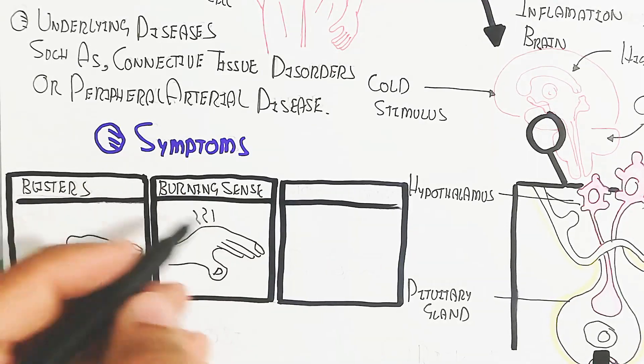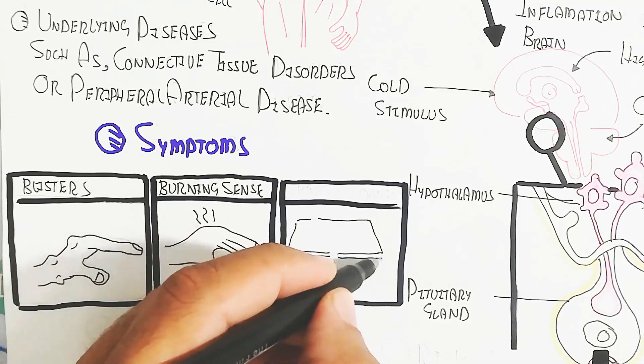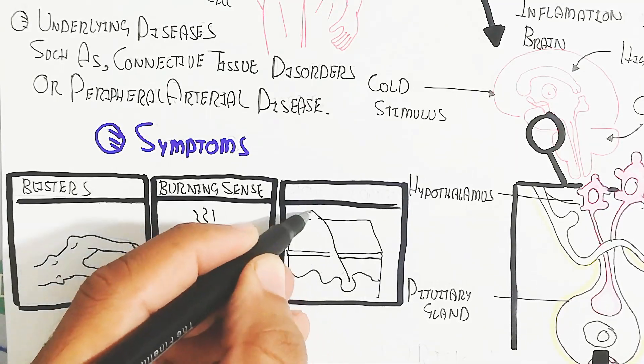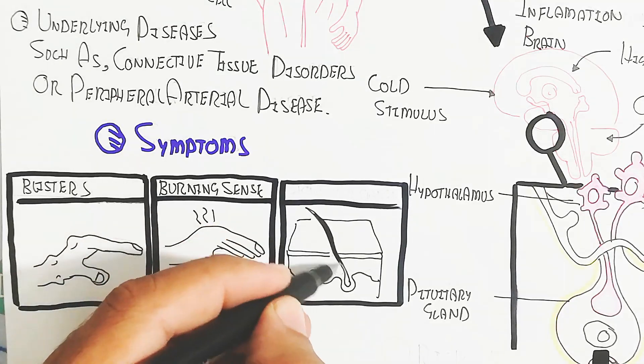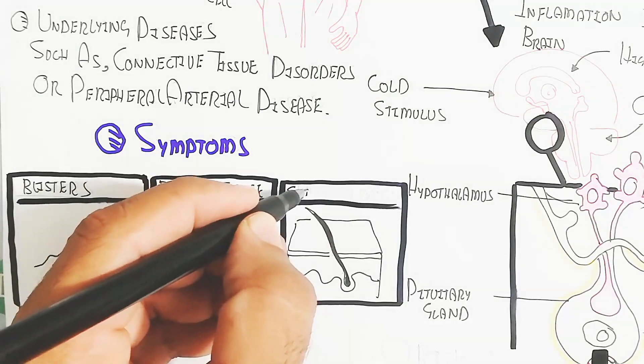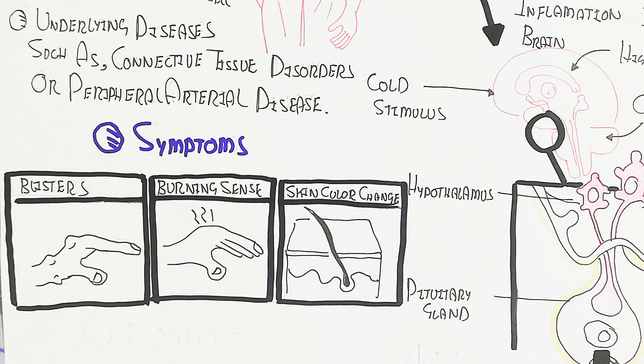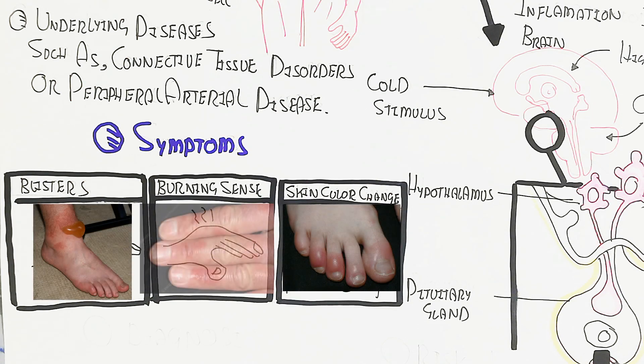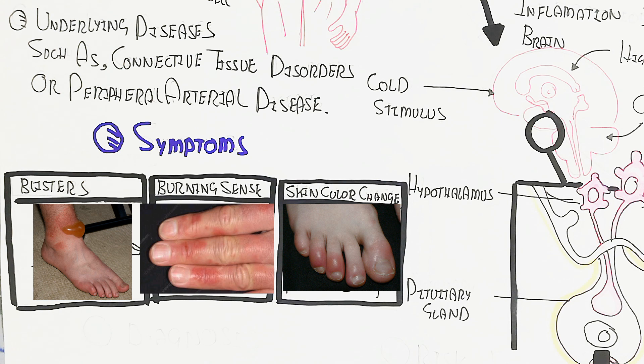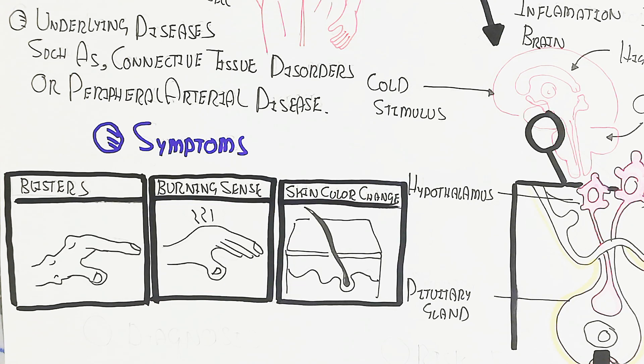So the symptom is the blisters, burning sensation, and on the other hand, the skin color change. So you can understand as well. So basically remember the imbalances of the sodium and potassium which will lead to cause this function shown in the diagram. And here you can see the picture. So this is the skin color change, the burning sensation, and the blister formation.